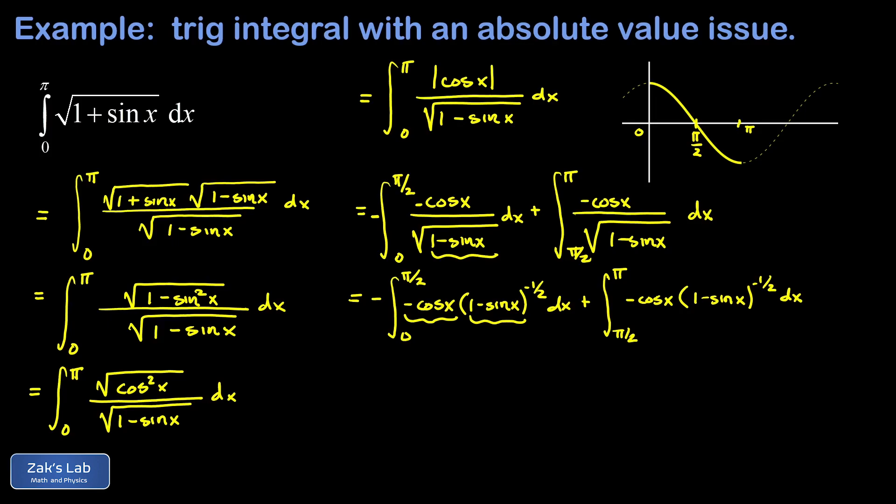If you prefer you could do an explicit u substitution and what you would do there is let u equal 1 minus sine x and then du would be negative cosine x dx. So you'd be ready to go ahead and use the power rule. I prefer the approach of just directly using the chain rule backwards here.